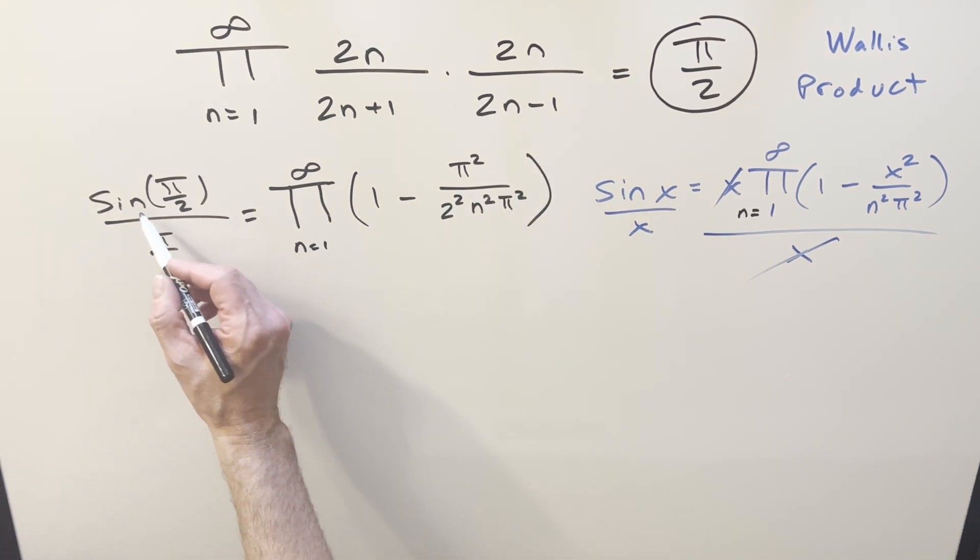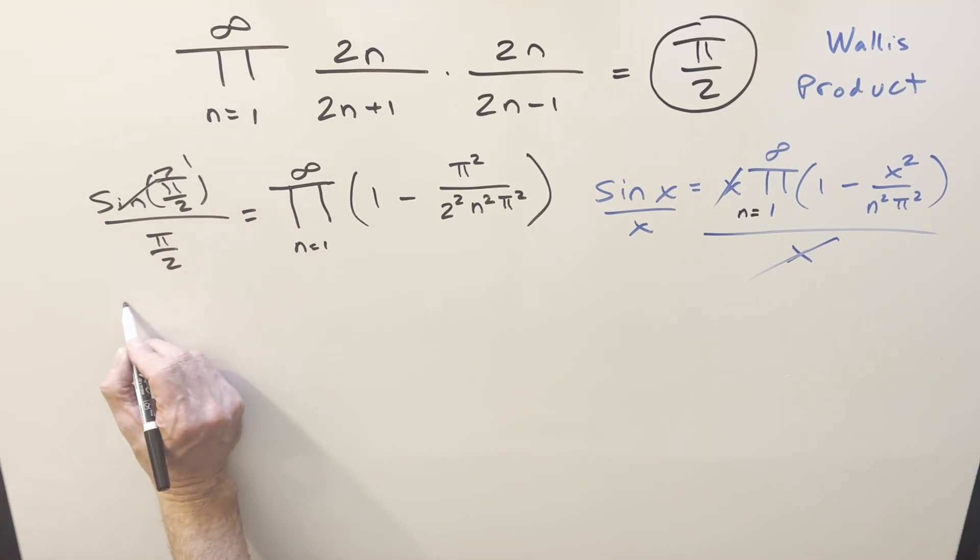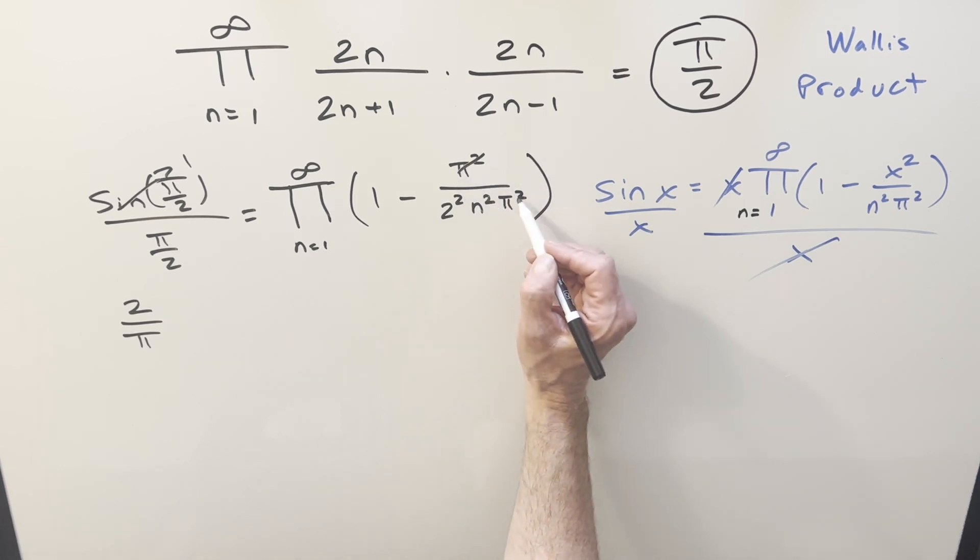Then we can simplify sine at pi over 2. That's just going to be a 1. So we can just flip this and write the left side as 2 over pi. Over here, pi squareds are going to cancel, leaving a 1 in the numerator.